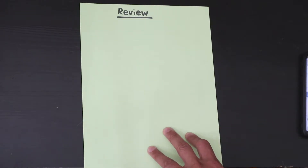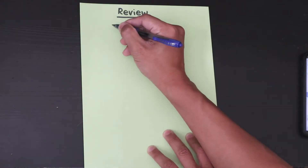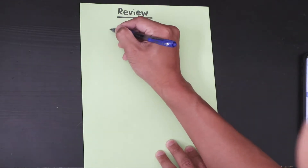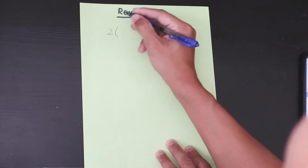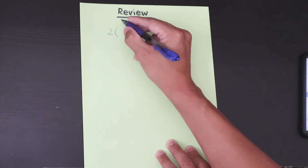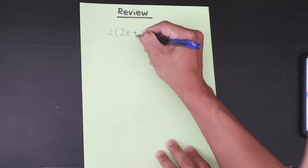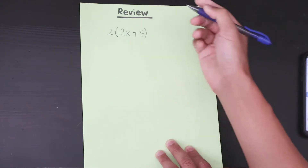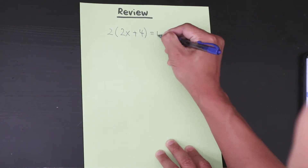The thing you have to know is how to solve multi-step equations — something like 2 multiplied by the quantity of 2x plus 4, in parentheses, is equal to 10.